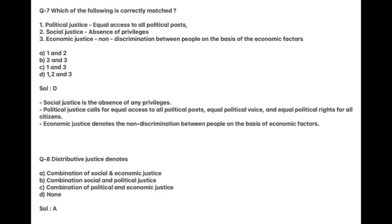Which of the following is correctly matched? Political justice: equal access to all political posts. Social justice: absence of privileges. Economic justice: non-discrimination between people on the basis of economic factors. Answer is D. Social justice is the absence of any privileges. Political justice calls for equal access to all political posts, equal political voice and equal political rights for all citizens. Economic justice denotes non-discrimination on the basis of economic factors.